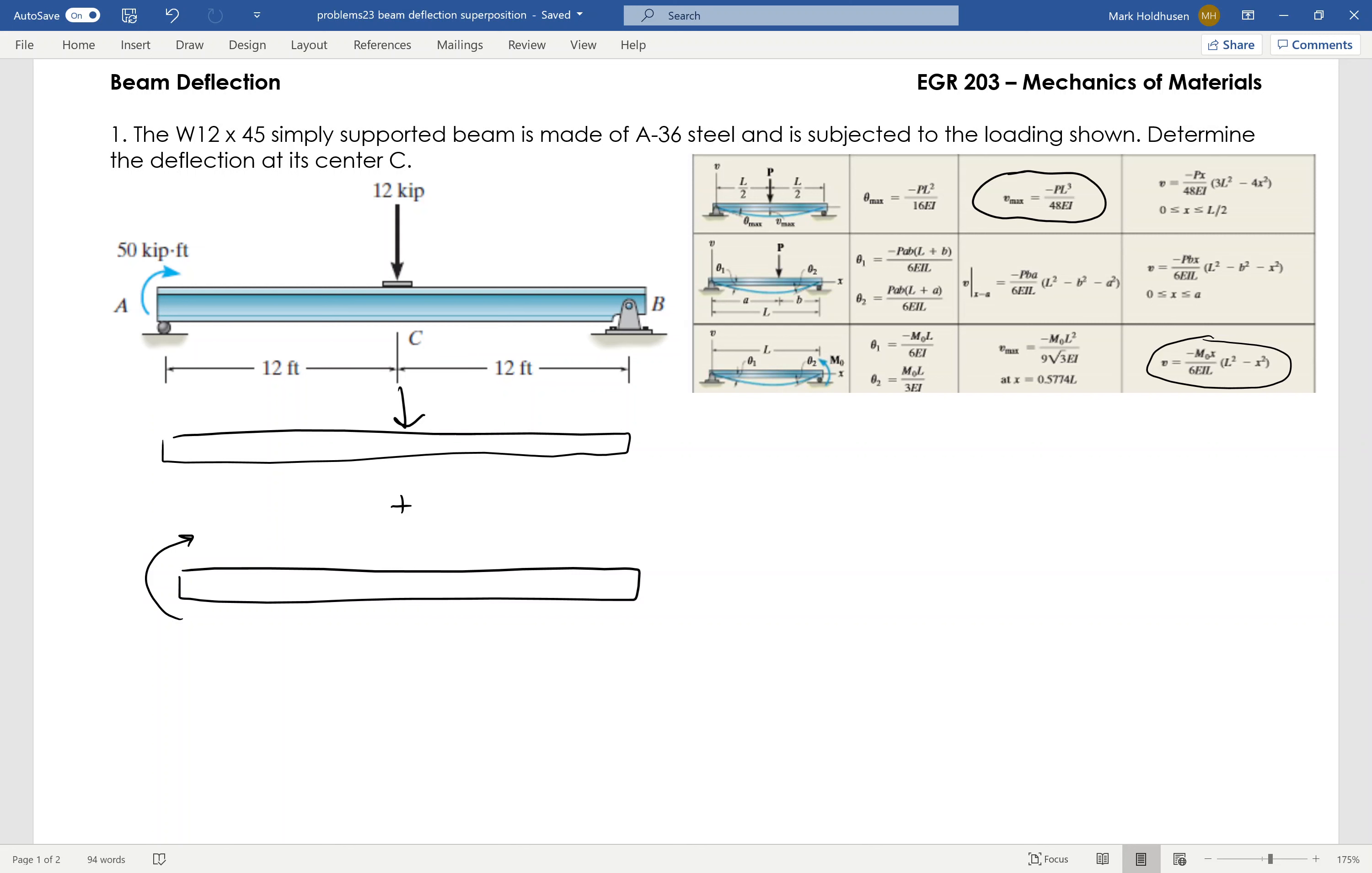So for that first one, my deflection at C is negative PL cubed. So P is going to be 12,000. L is going to be 24, but I want everything in inches, right? Everything in pounds and inches.